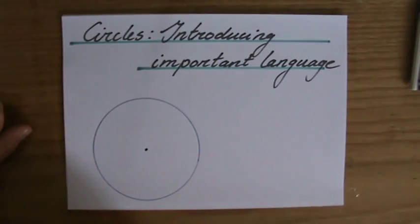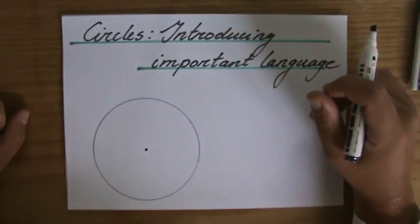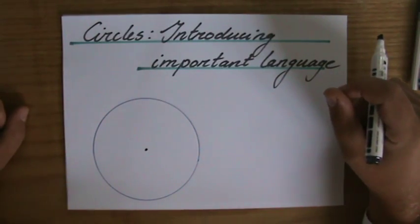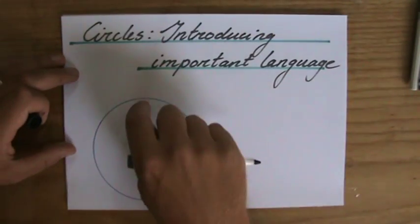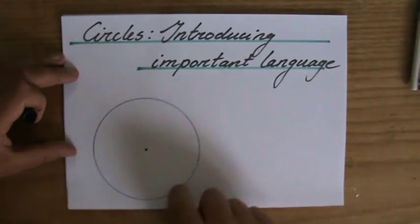We are here to talk about circles and I want to introduce some very important language. I'm sure you already know what a circle looks like. It's a shape in this form.